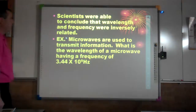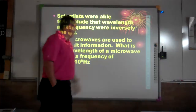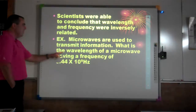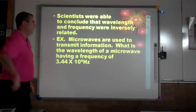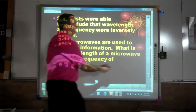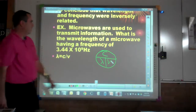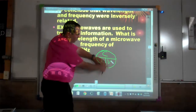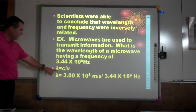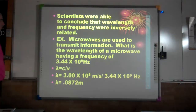Looking at an example problem: microwaves are used to transmit information. What is the wavelength of a microwave that has a frequency of 3.44 × 10⁹ hertz? Wavelength equals speed of light divided by frequency. Using c = 3.00 × 10⁸ m/s divided by 3.44 × 10⁹, we get 0.0872 meters. When using your calculator, use the EE button — typing it as times 10 to the ninth without parentheses can cause errors.